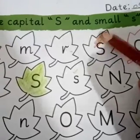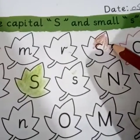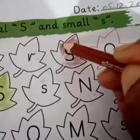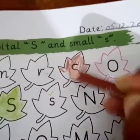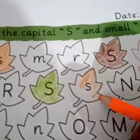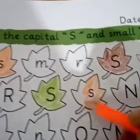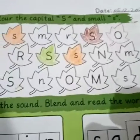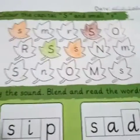Here is the capital S — fill colors in it like this. Here is another capital S — see the colors in it. Now fill colors in the small S for nursery class. Hope you have understood. Fill colors in those leaves which have capital and small S. Please complete your page and make it colorful.